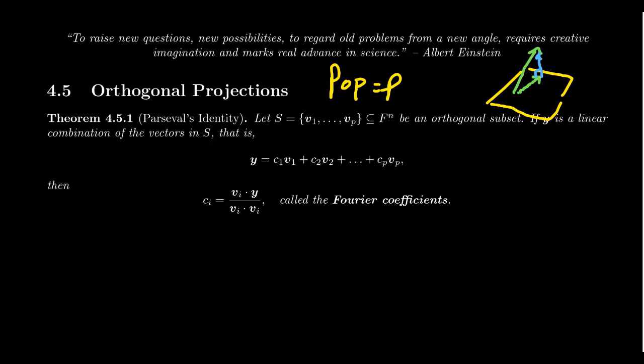So before we get into that, let me first talk about the so-called Parseval's identity. So we have a set of vectors, S, which contains P many vectors, V1, V2, up to VP, living inside of our vector space, Fn.